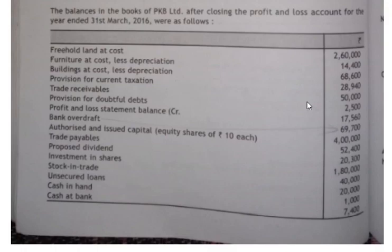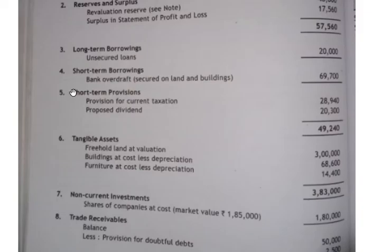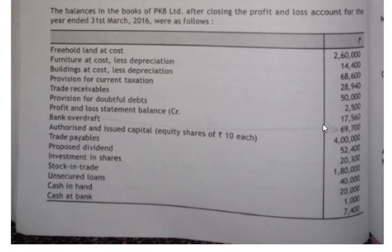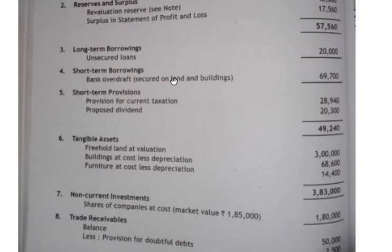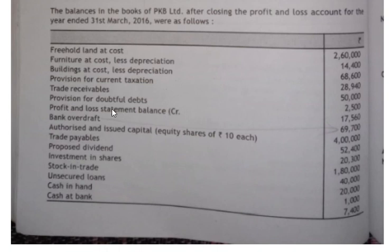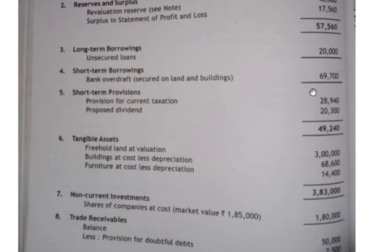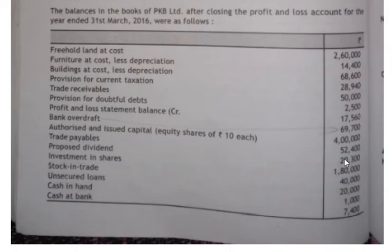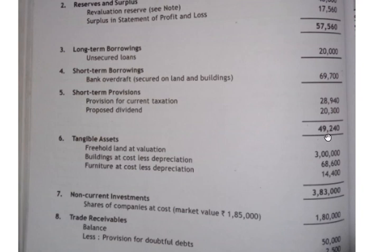Working note three — long-term borrowings: unsecured loans of twenty thousand. Working note four — short-term borrowings: bank overdraft is sixty-nine thousand seven hundred, secured on land and buildings up to a limit of two lakh fifty thousand as mentioned in the additional information. Working note five — short-term provisions: provision for current taxation is twenty-eight thousand nine hundred forty, proposed dividend is twenty thousand three hundred. Total short-term provisions: forty-nine thousand two hundred forty.